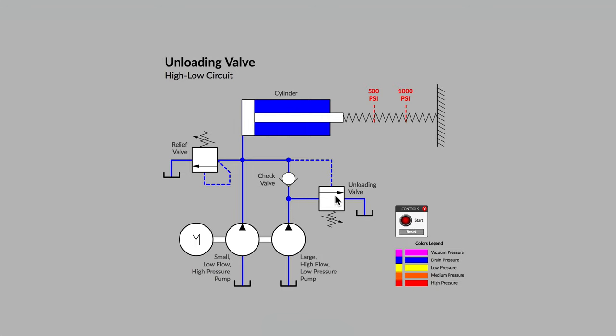The symbol for an unloading valve is quite similar to the symbol for a pressure relief valve. They are both normally blocking or normally closed off valves. Springs are used to keep the valves in their closed position. They are both waiting for a high enough pressure value on the dashed pilot line to cause them to open and pass flow.